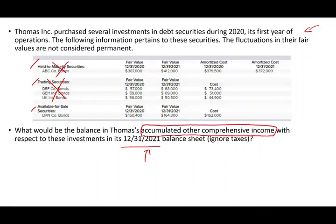Available for sale securities are the securities whose changes end up in accumulated other comprehensive income. We're looking for 2021. What I'm going to do is go through the whole process to show you how we arrive at the answer, and by doing so, you'll also learn how to do mark-to-market investments.